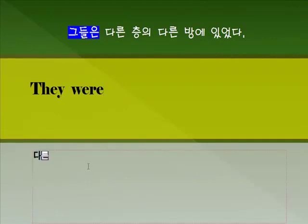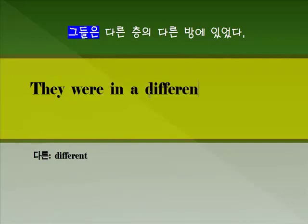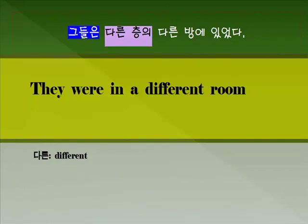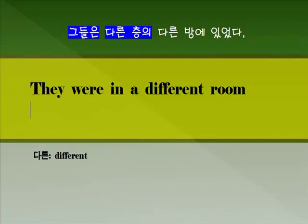'다른'이라고 하는 뜻은 여러분들 알고 있죠? 'different'입니다. 다른 방에는 'different room'이 되겠죠. 층이라고 하는 단어는 'floor'라고 하는 단어가 있죠? 이때는 층에 대해서는 'on'이라고 하는 전치사를 씁니다. 그래서 'they were in a different room on a different floor'입니다.